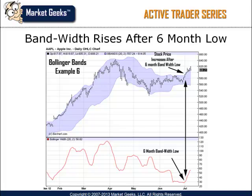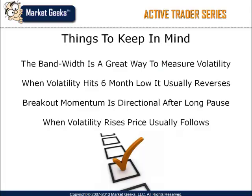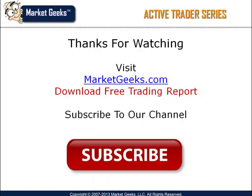Notice how the bandwidth begins to increase quickly after reaching the six-month low level. The price of the stock will usually begin moving higher within a few days of the six-month bandwidth low. The squeeze is one of the simplest and most effective methods for gauging market volatility, expansion and contraction. Always remember that markets go through different cycles and once volatility decreases to a six-month low, a reversion usually occurs and volatility begins to go up once again. When volatility begins to increase, prices usually begin moving in one direction for a short period of time. Thanks for joining us for today's tutorial. This is Roger Scott wishing you the best in your trading.